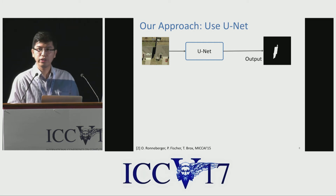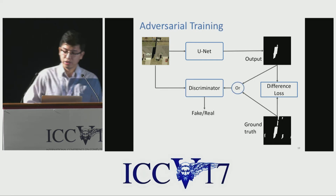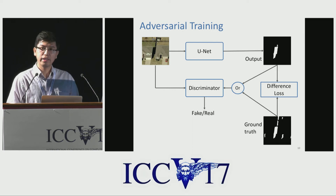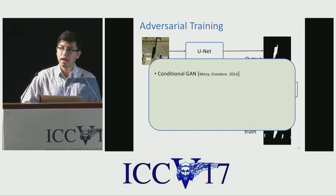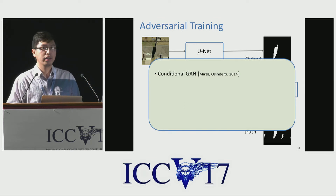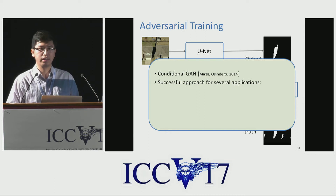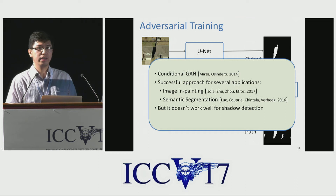In particular, we use UNET, which is trained using a difference loss with the ground-truth mask. Additionally, during training, we use a second network — the discriminator. This network takes two inputs: the RGB image and the shadow mask, either from the UNET or from the ground-truth. The discriminator will try to tell whether the provided mask is the real one or the generated one. This architecture is known as conditional GAN, which has been successfully applied on several different applications like image inpainting or semantic segmentation.